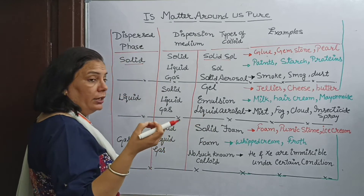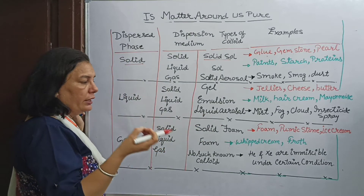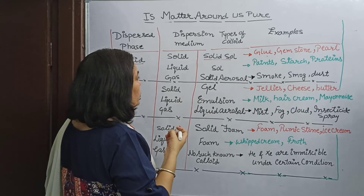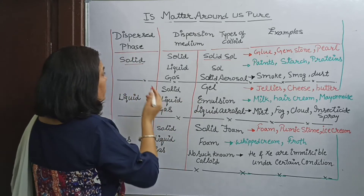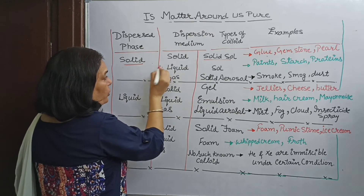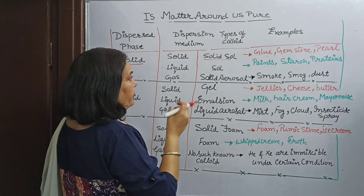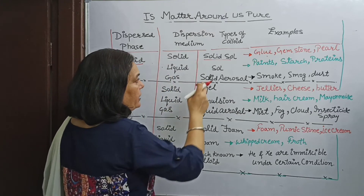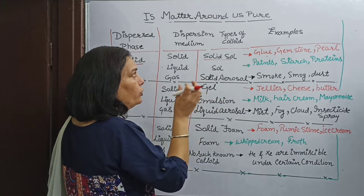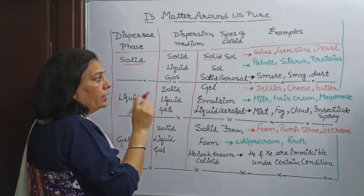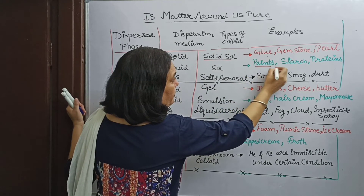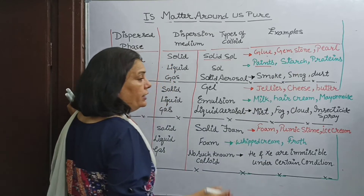Colored glue — not transparent colorless glue, but colored glue — is an example of solid sol. Second, when solid is dissolved in liquid, these colloidal solutions are known as sol. Examples of sol are paints, starch, and proteins.